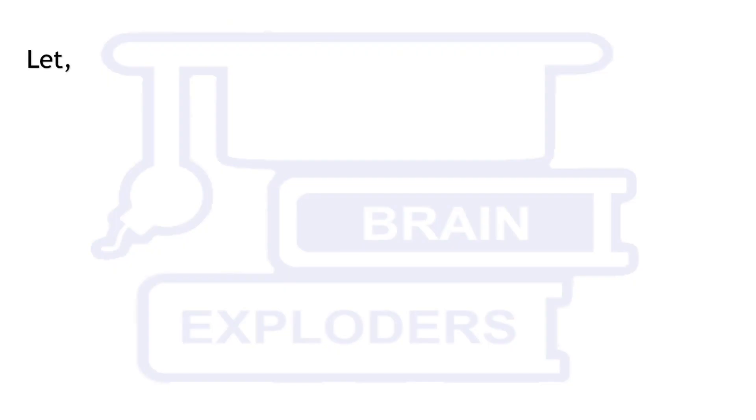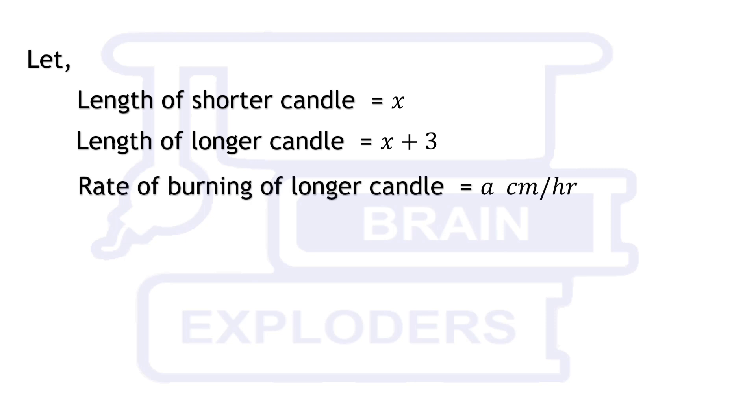Let the length of shorter candle is x. Length of longer candle is 3 cm more than shorter candle. Let the rates of burning of longer candle and shorter candle are a cm per hour and b cm per hour respectively.